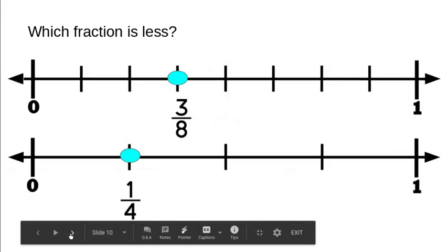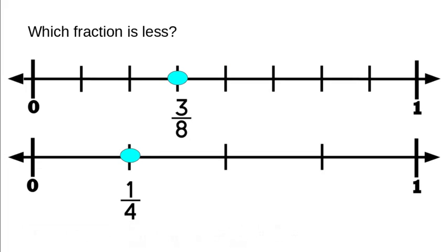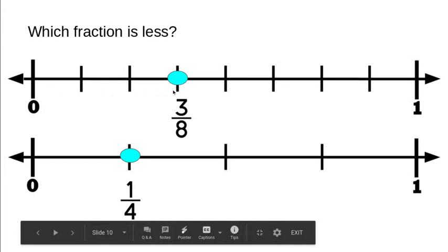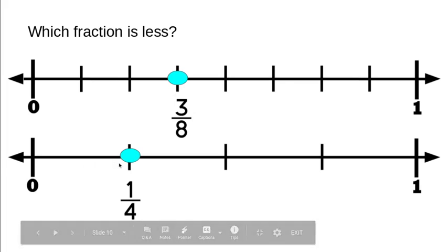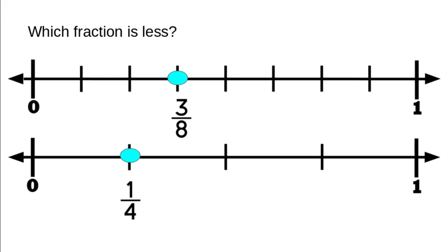Again, we have two number lines broken up into different segments. The first one is broken up into eighths and represents three eighths. The second number line is broken up into fourths and has one fourth graphed. They want to know which fraction is less — which fraction is closer to zero, which fraction is smaller. You could think of this like if you were walking somewhere — which distance is less? If you said one fourth, you are correct.